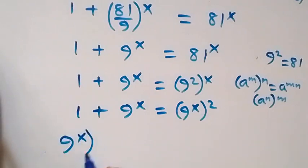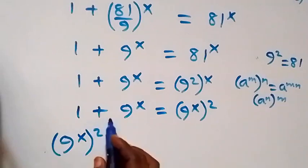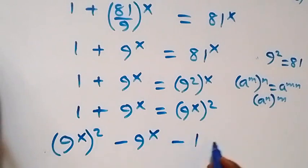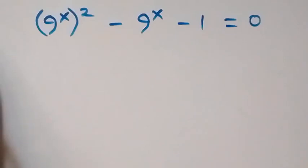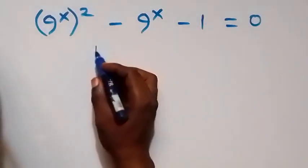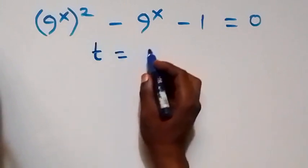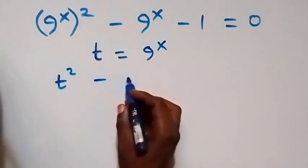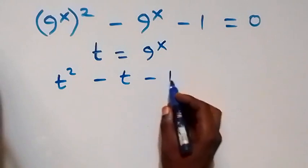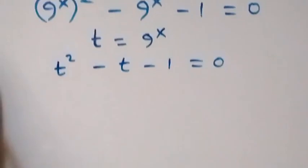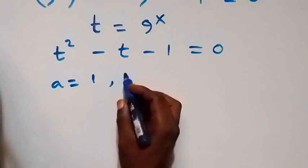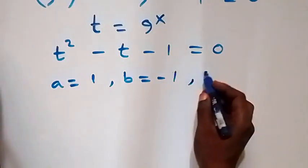Taking everything to one side and maintaining 9 raised to power x raised to power 2, we have 9 raised to power x squared, minus 9 raised to power x, minus 1 equals 0. Let t equal 9 raised to power x. Then this becomes t squared minus t minus 1 equals 0, which is a quadratic equation with a equals 1, b equals negative 1, and c equals negative 1.